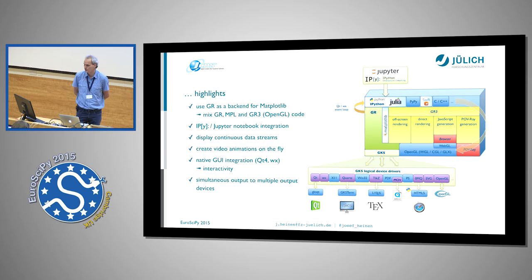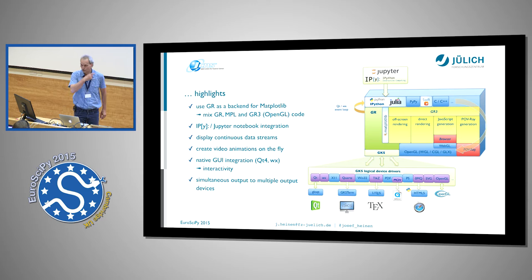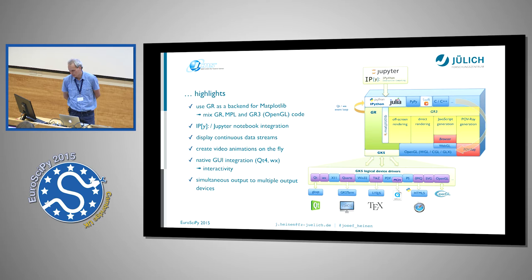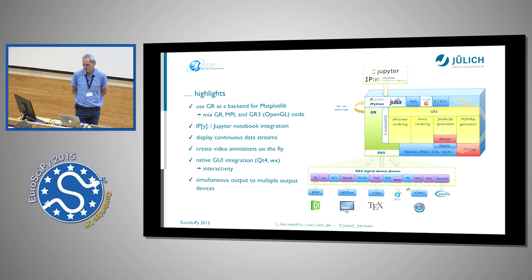What are the highlights of this GR framework? As I mentioned, you can mix two-dimensional code with, for example, OpenGL code. There is a very nice Jupyter integration. You can display continuous data streams even in the browser. And as opposed to what you saw in the last talk, we are talking about dynamic documents and dynamic data. We also have a native graphical user interface integration with Qt4 or WX widgets, and this gives us the interactivity we need for our applications.